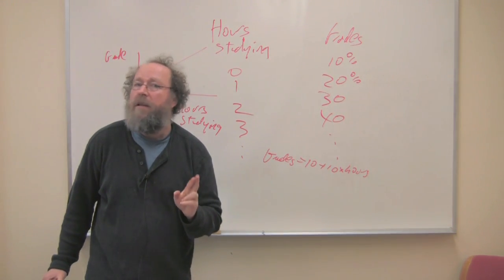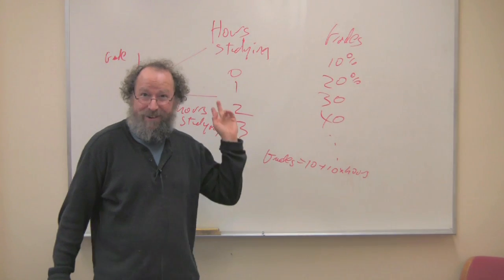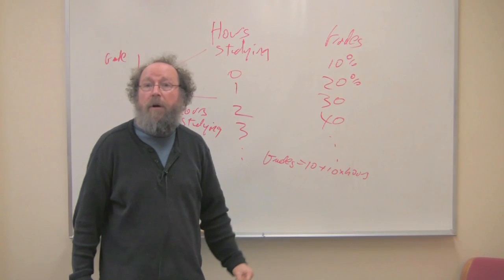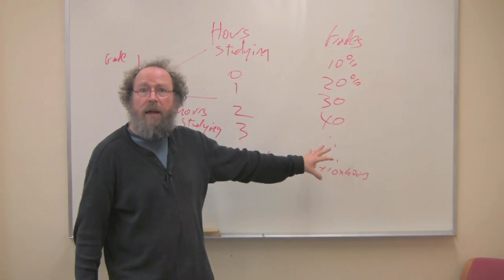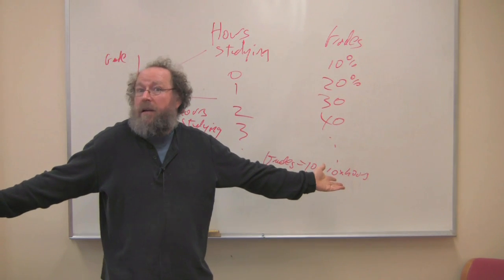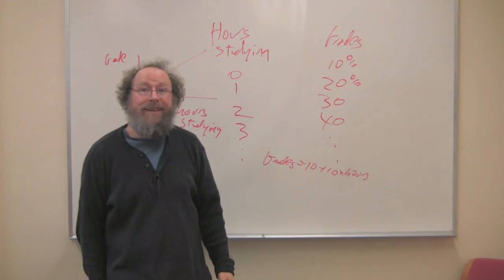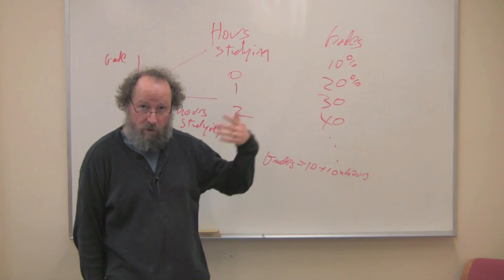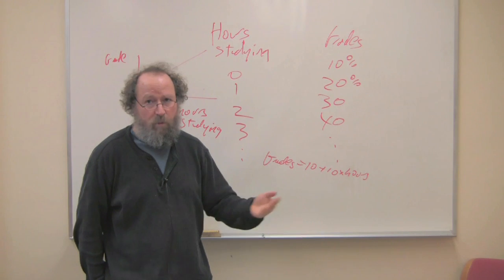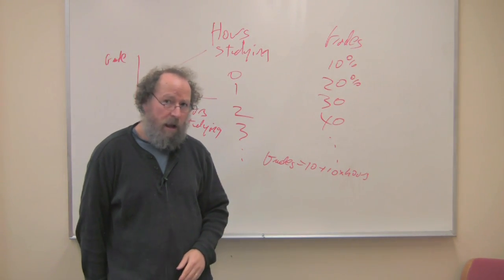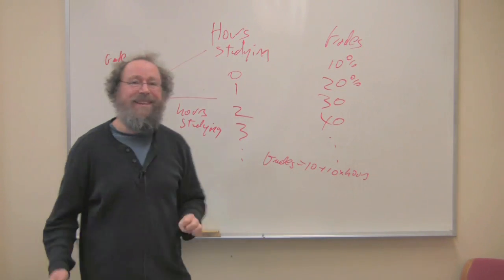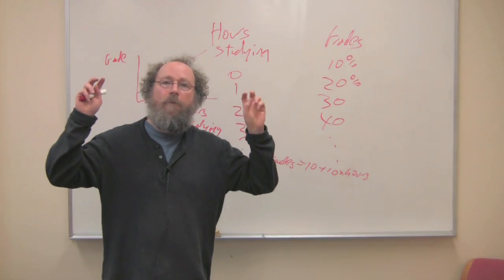And you learn from this that your conclusion that you'll get a higher grade if you're studying is represented by the graph. It's represented by the numbers in the table. But it's all made up. Is it true? I don't know. You could do a study. You could investigate. You could ask all your friends, how many hours did you study? What grades did you get?